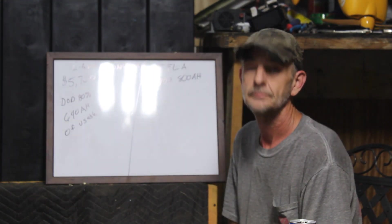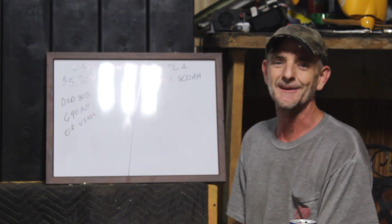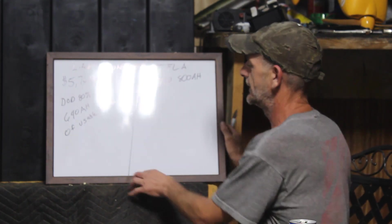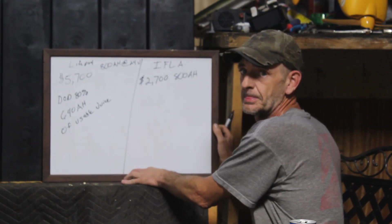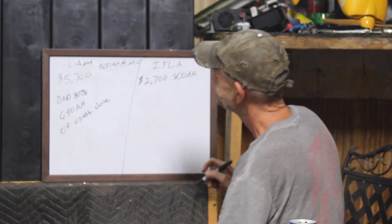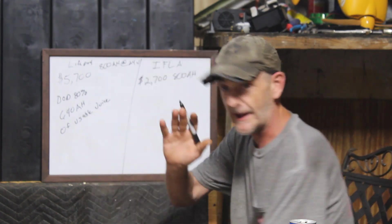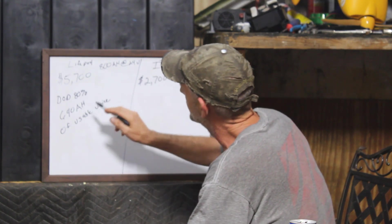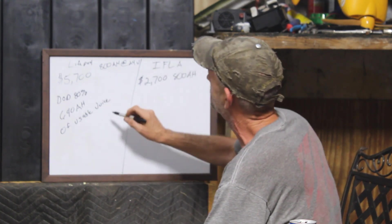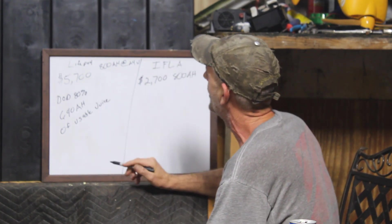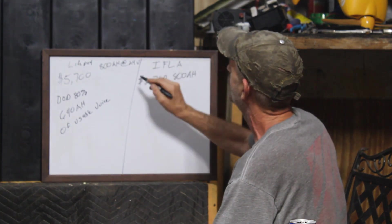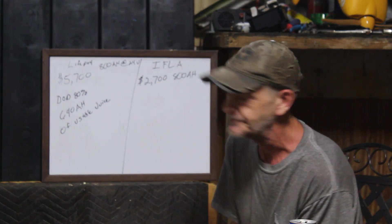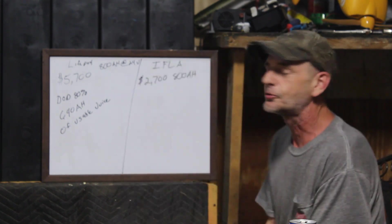That's a little bit better. Okay, that gets us a recommended 640 amp hours of usable juice from our $5,700, 800 amp-hour, 24-volt LiFePO4 battery. Now let's move over to our $2,700, 800 amp-hour IFLA.